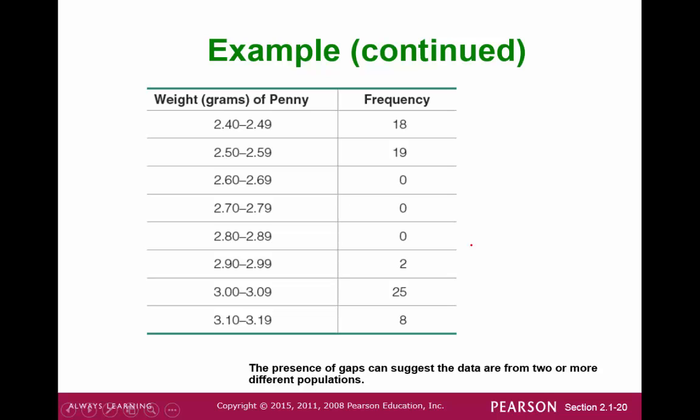If we look at the frequency distribution table here, we see that there's a lot of pennies that were pretty light in this collection of pennies that we had. And then there's a bunch of pennies that were pretty heavy and then not very many pennies fall in between here. So this tells us that the heavier pennies and the lighter pennies must have come from two different populations.